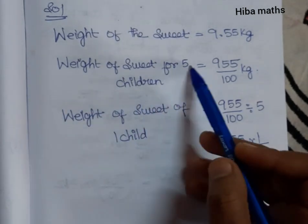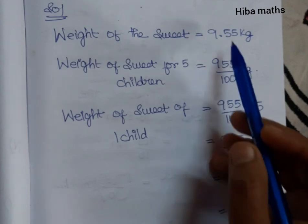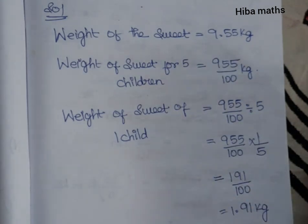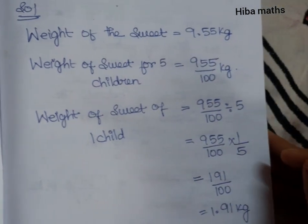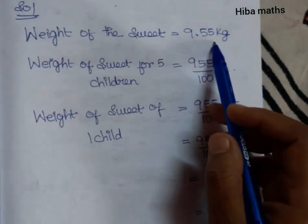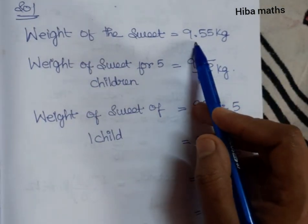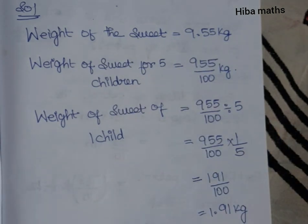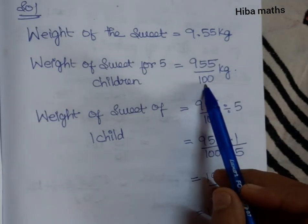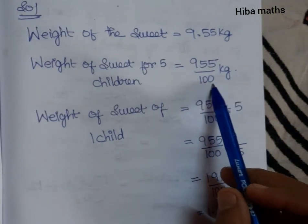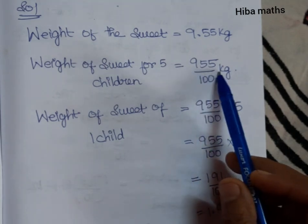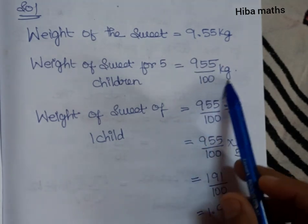We will remove the decimal point. How many decimal points are there? There are two decimal places. So we divide by 100. So 9.55 becomes 955 divided by 100 kg.